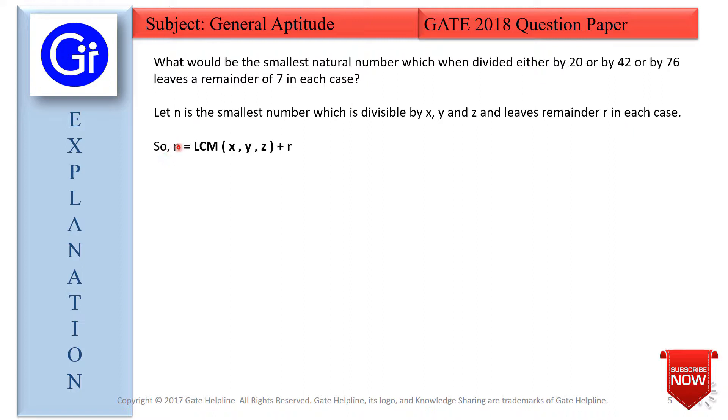The formula is: n equals LCM of x, y, z plus r. According to the question, we have x equals 20, y equals 42, z is 76, and the value of r is 7, that is the remainder.